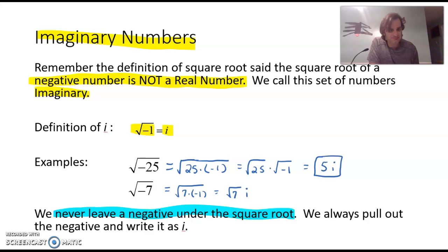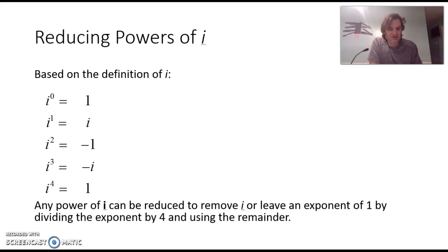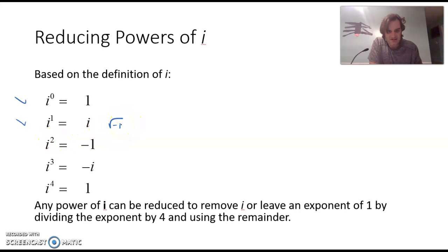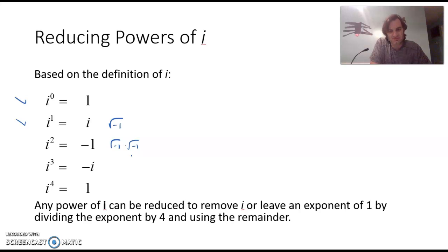Let's see some more properties. We can say that i to the zero is 1 — anything to the zero power is one, that's the definition. i to the first is i, since anything to the first power is itself, and that's still the square root of negative one. i squared would be the square root of negative one times the square root of negative one. If you squared that, it would knock out the square root and give you negative one. So i squared always reduces down to negative one — it turns into a real number.